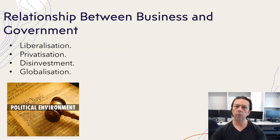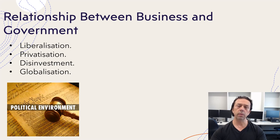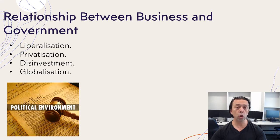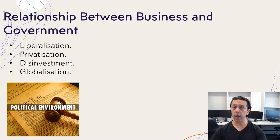We shall now look at the relationship between the government and businesses. These four that are listed on your screen basically impact countries and international businesses in different ways. Governments often have different rules and regulations from country to country, from region to region, from continent to continent, but also on a smaller scale — for example, differences in laws implemented in New South Wales versus Victoria and how they play their role in enhancing business interaction.